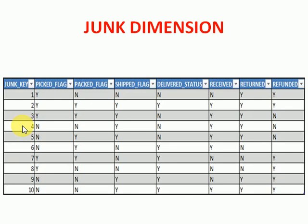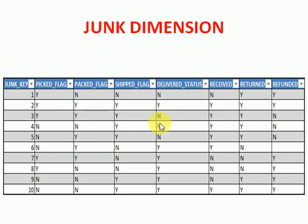Majorly, for rapidly or slowly changing dimension tables, we will be deleting all flag-related columns from that table and adding an additional foreign key in that table — that is called the Junk key. All those flag columns will be maintained in a different table — that is called the status flags table, which we will call the Junk Dimension.